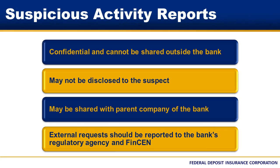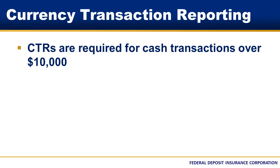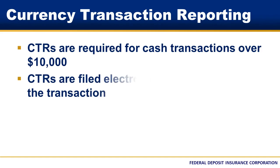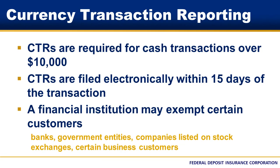Let's now spend a minute talking about other BSA reporting and record-keeping requirements. In addition to SARs, banks are also required to submit other reports to FinCEN, including currency transaction reports, also referred to as CTRs, and designations of exempt person forms. Banks are required to file CTRs for cash transactions over $10,000. CTRs must be filed electronically with FinCEN within 15 calendar days of the transactions. Banks may exempt some customers from the filing of CTRs under specific conditions and circumstances. When a bank chooses to exempt a customer from CTR filings, the institution must file a form with FinCEN.